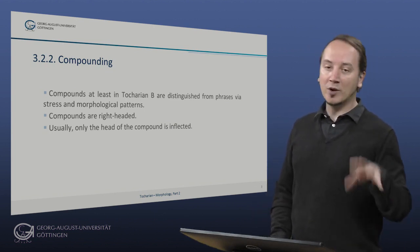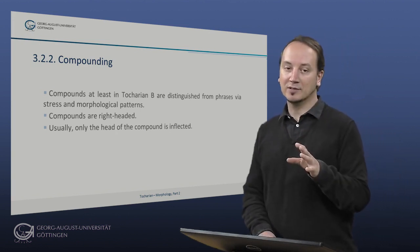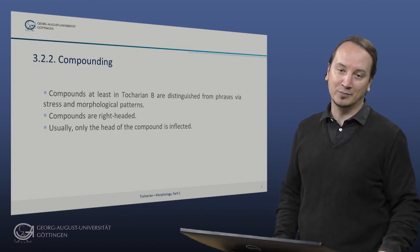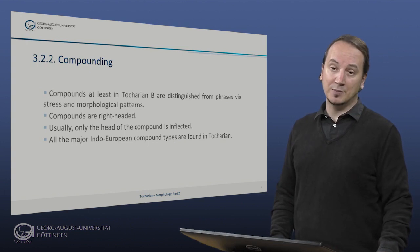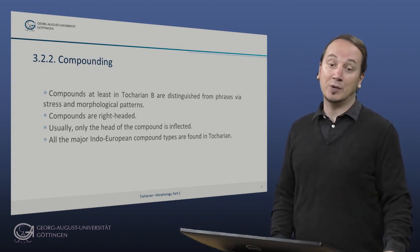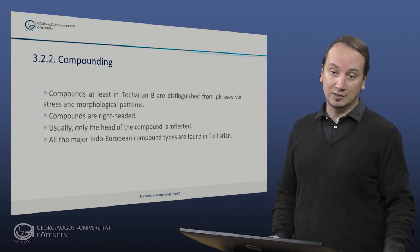Think about German der hohe Priester with the two possible genitives des hohe Priesters and des hohen Priesters. All the major Indo-European compound types that we know and love from the classical languages like Vedic Sanskrit and Homeric Greek are also found in one way or the other in Tocharian.